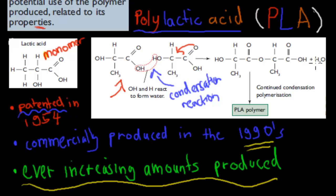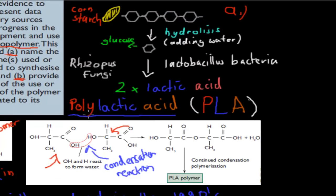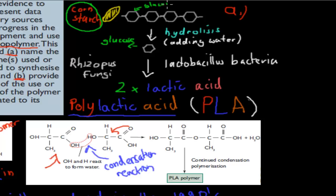The actual polymer is quite a few hundred monomers long. Now for Part A — naming the specific enzymes or organisms used to synthesize the material. The first step is we harvest cornstarch from corn. Each unit inside the starch is a glucose molecule, and the whole chain together is starch.